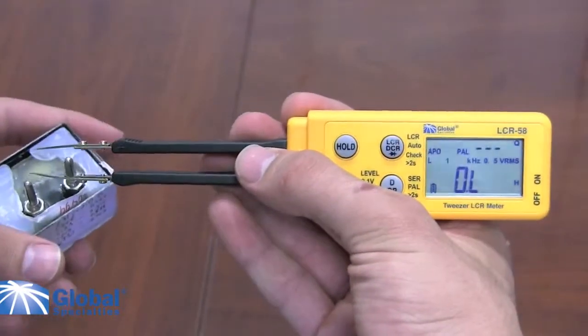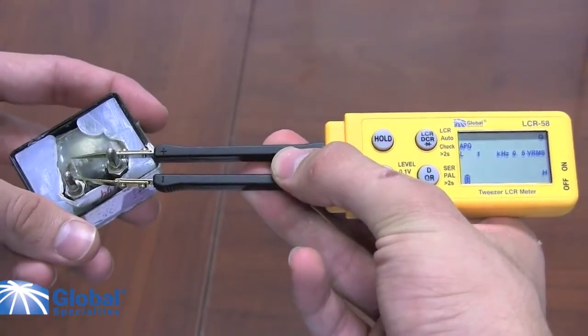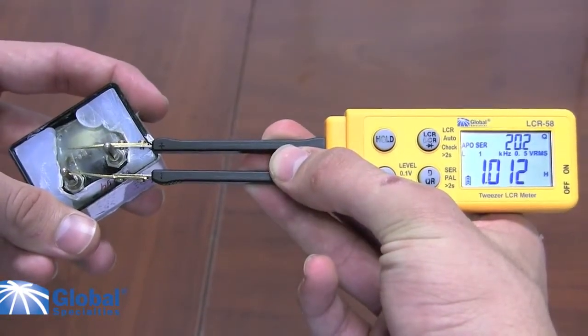The inductance that we are measuring is a 1 henry inductance. As you can see, our result is well within our accuracy parameters.